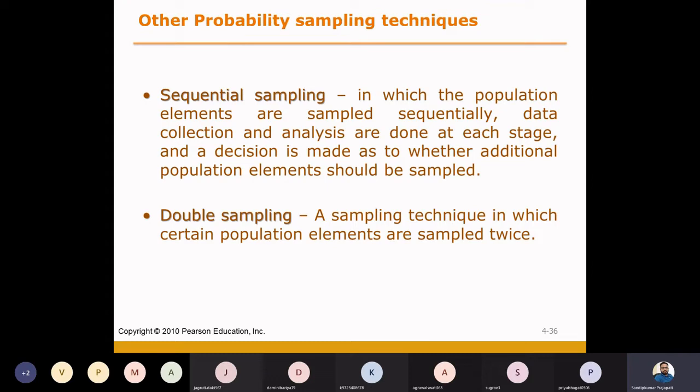In sequential sampling, we add one-by-one sequentially. We have a sampling frame available with the population. We select a slot of elements, collect data from them, and analyze the business. We check if we can reach a conclusion. If not, we select more elements, collect their data, and analyze again.